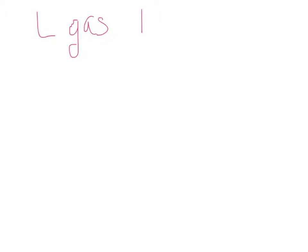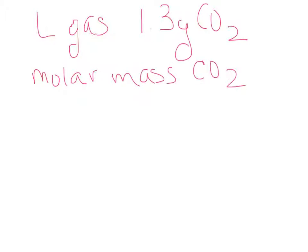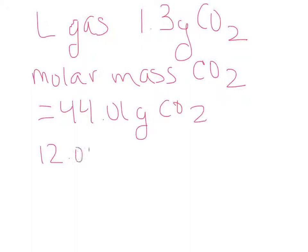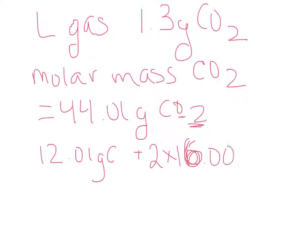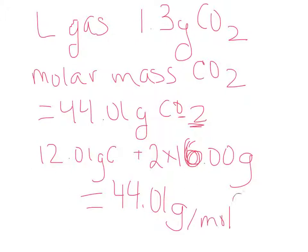For example, if I want to calculate how many liters of gas are in 1.3 grams of carbon dioxide — going from grams to moles of carbon dioxide, we've calculated that the molar mass of carbon dioxide is equal to 44.01 grams of carbon dioxide. That's because I have 12.01 grams of carbon plus two oxygen atoms, so 2 times 16.00 grams of oxygen, which adds up to 44.01 grams per mole of carbon dioxide.